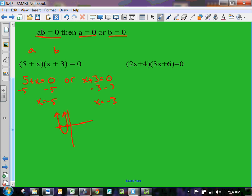Looking at the second one, we're going to break it apart again. So you have two x plus four equals zero, or three x plus six equals zero. By solving it, subtract four from both sides, so two x equals negative four. Divide that by two, so x equals negative two.